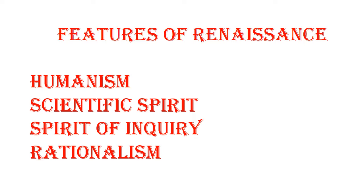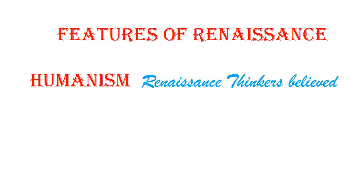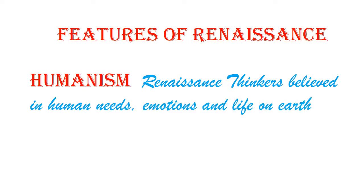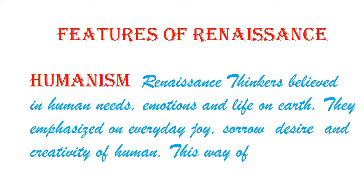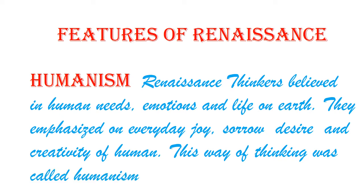The first feature is humanism. During the Medieval period, all human activities centered around religion as it was considered crucial to human existence. People at that stage were more concerned with religious beliefs such as life after death rather than worldly affairs. But Renaissance thinkers believed in human needs, emotions, and life on earth. They gave more importance to everyday life like joy, sorrow, desire, and creativity of human. This way of thinking was called humanism.